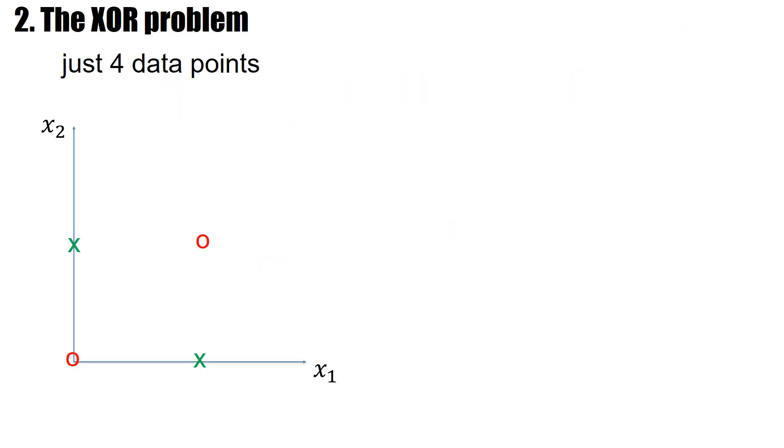The XOR is a famous example. The XOR problem is defined in two dimensions. I have two positive examples. They lie at positions 1-0 and 0-1. And I have two negative examples. They lie at positions 0-0 and 1-1. The name XOR comes from the corresponding logical operations. XOR for exclusive OR.